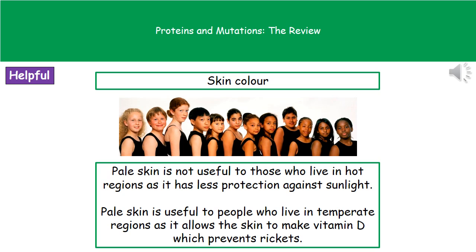If you've got pale skin in areas where sunlight is more limited, then we can absorb as much of that sunlight as possible to allow our skin to make vitamin D, which prevents a condition called rickets. If you had darker skin living in this kind of country, the opposite would be true — it wouldn't be very helpful.